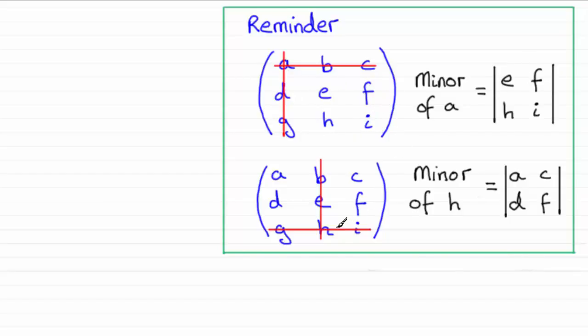And you can see in this second example if we had the element H down here we would imagine crossing off that row and that column passing through H, leaving us with these elements A, C, D and F. And the minor of H then was found by working out that determinant.